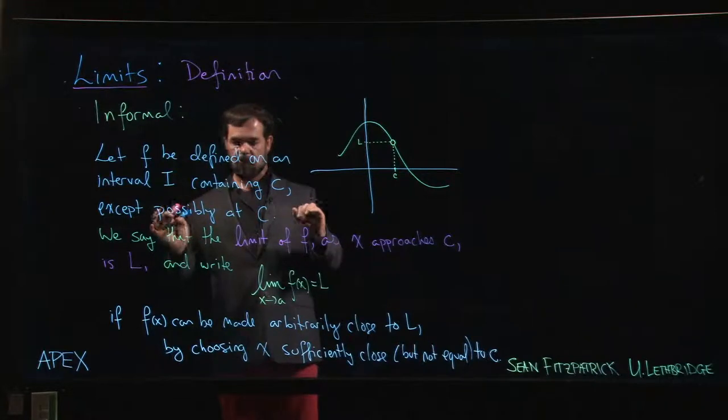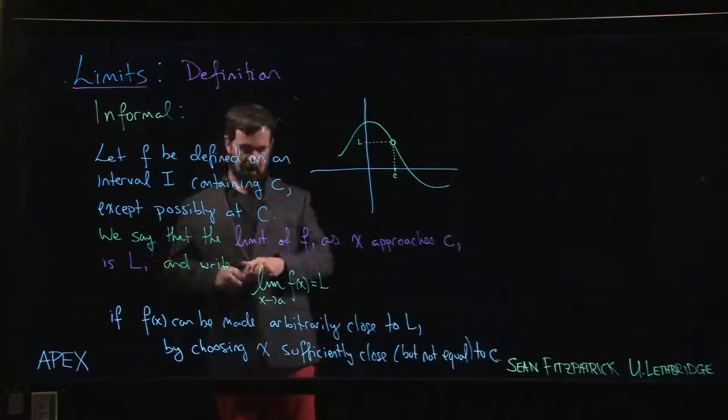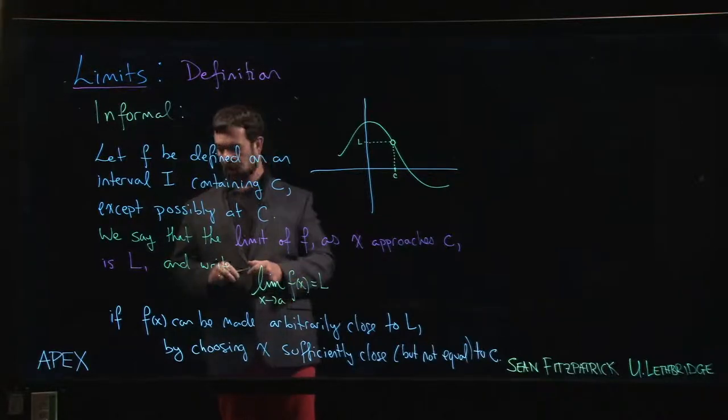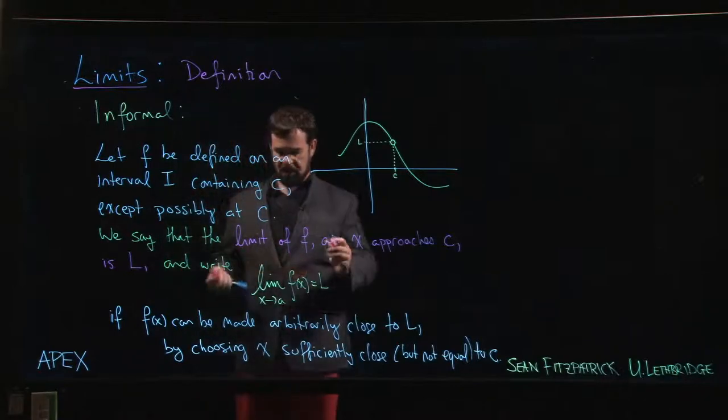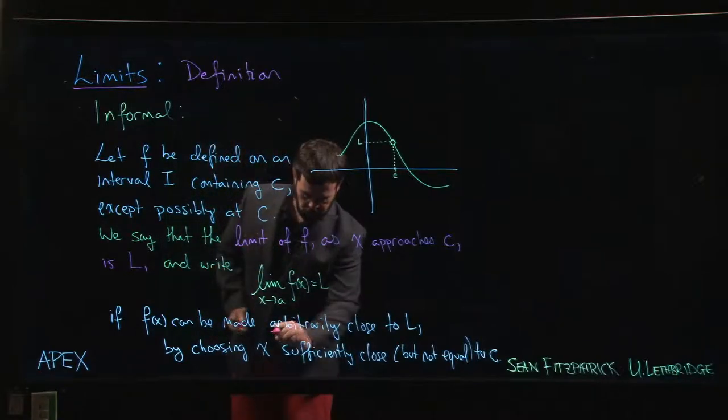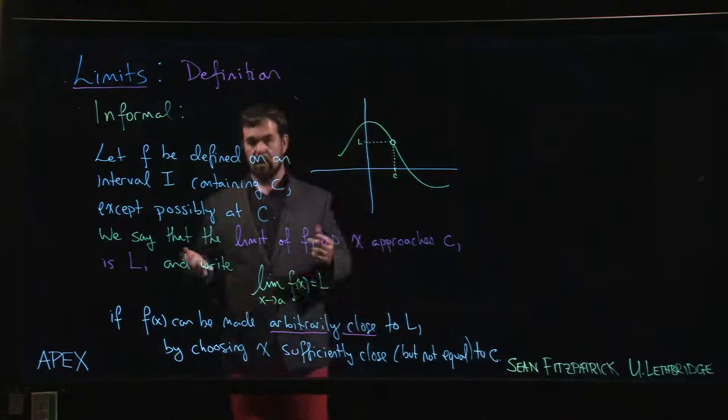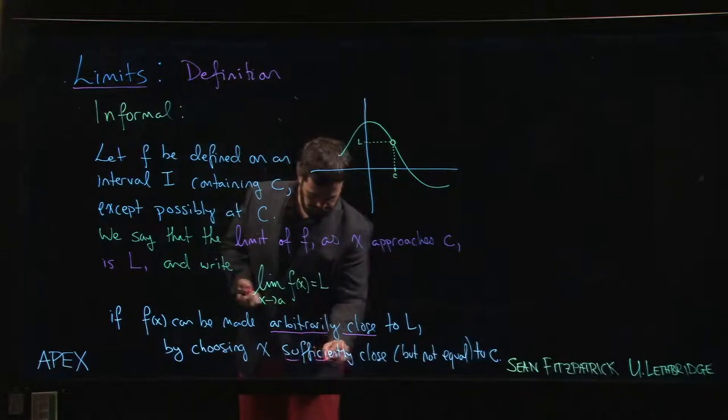What does it mean to say that the limit of our function as x approaches C is this value L? We use this notation we've seen already. One way to say this is: you can make f(x) arbitrarily close to L as long as you choose your x value sufficiently close, but not equal to C.